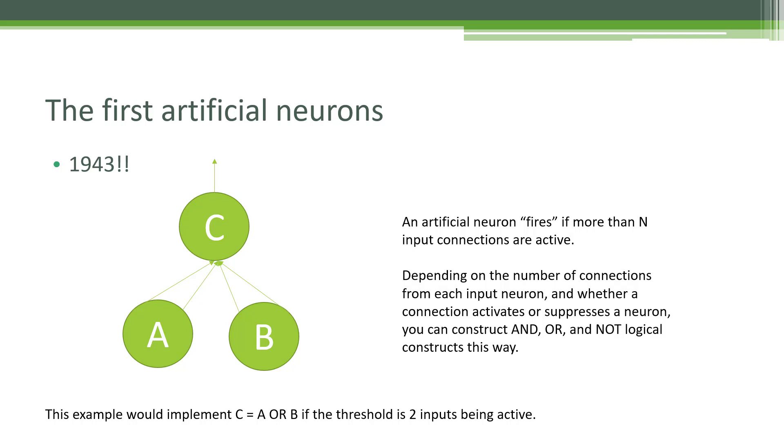At one point someone said, the way we think neurons work is pretty simple. It wouldn't be too hard to replicate that ourselves and maybe try to build our own brain. This idea goes all the way back to 1943. People proposed a very simple architecture where an artificial neuron fires if more than a certain number of its input connections are active. People realized that you can actually create logical expressions, Boolean expressions by doing this.